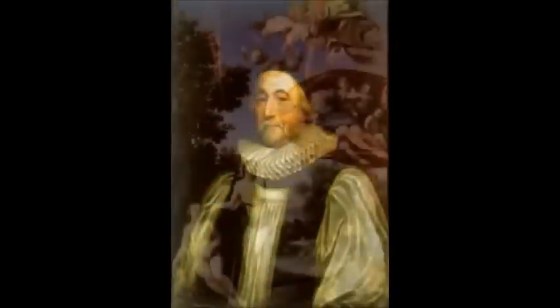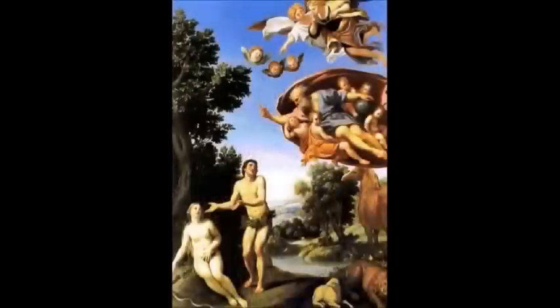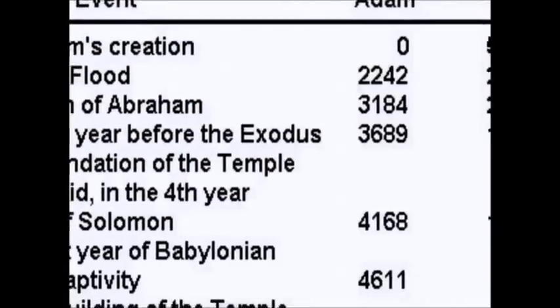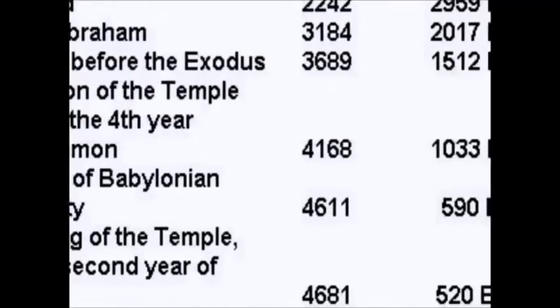In the 17th century, a theologian called James Usher worked out the age of the universe based on the chronology of the Bible. It was created, he concluded, in a week in October 4004 BC.